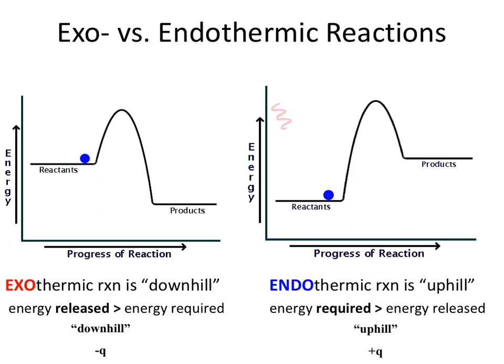Q represents heat, and this negative sign tells us that heat energy is being released from the system. On the other end, we have another reaction progression diagram where reactants are at lower energy and products at higher energy. In this case, energy is being absorbed — the heat energy is picked up by the reactants as they're converted into products. This is an endothermic process, and we represent the Q value as positive because the system is gaining heat.